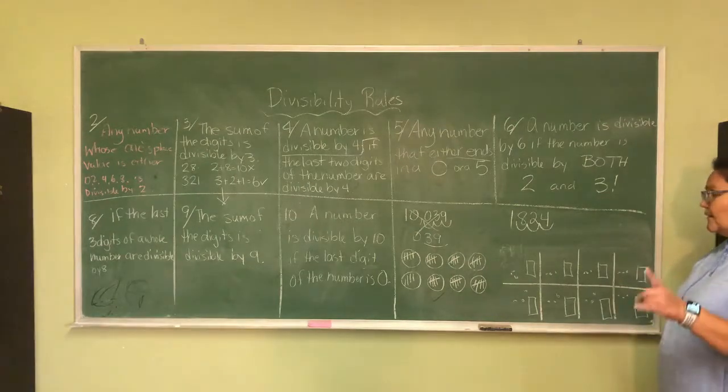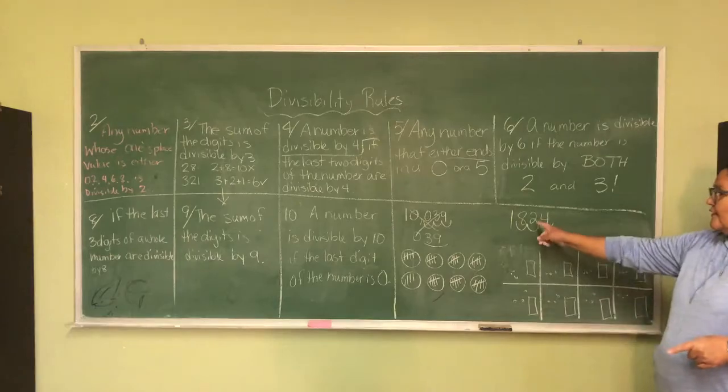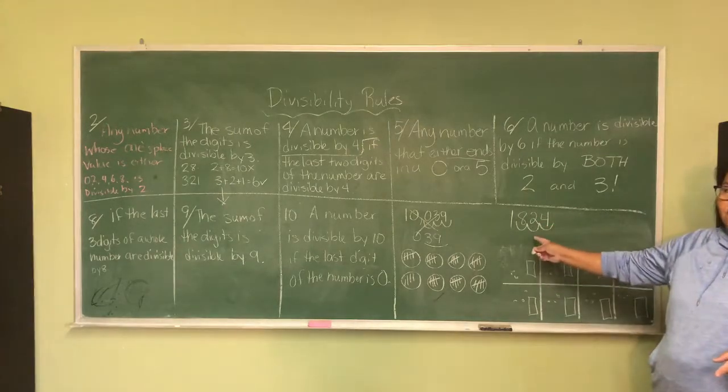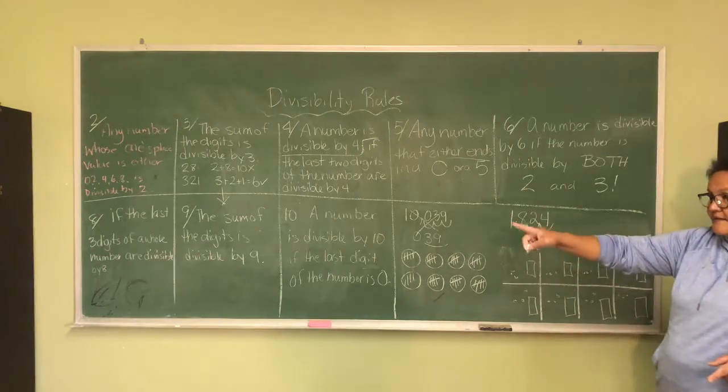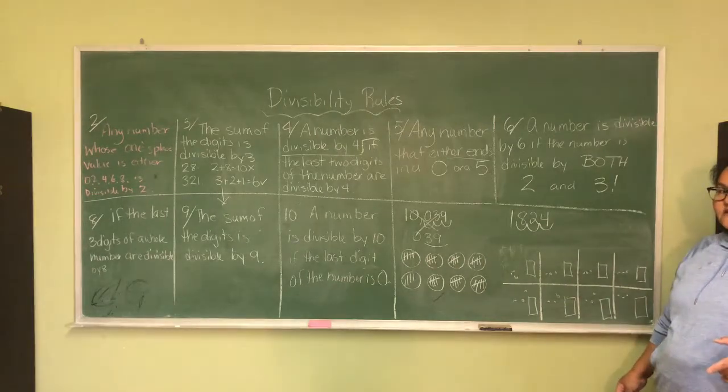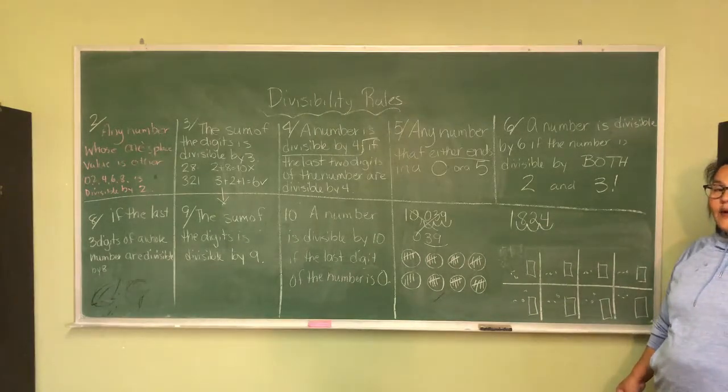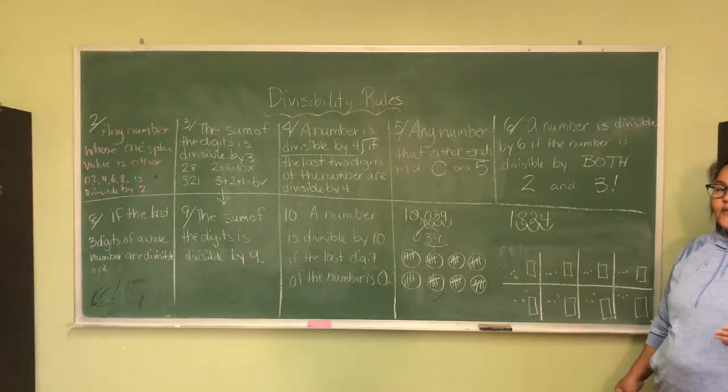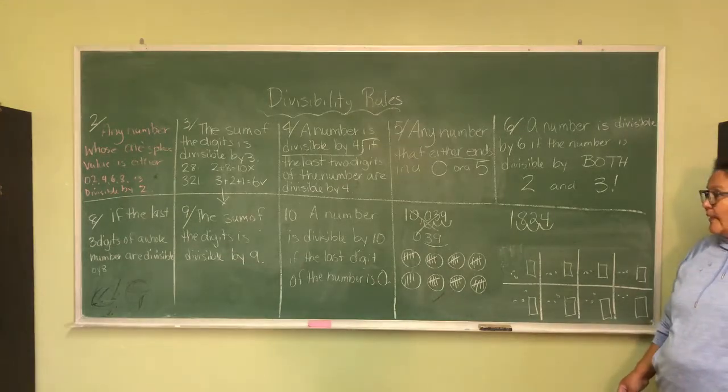Now, I'm going to leave that up to you to solve that. But, it should be relatively simple because the rule says if the last three digits are divisible by 8, then the rest of the number is divisible by 8.